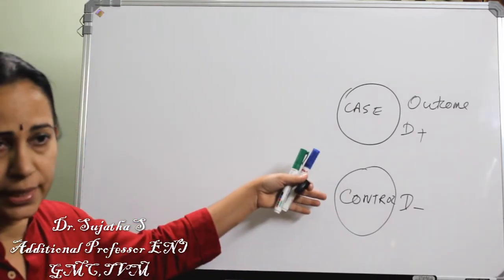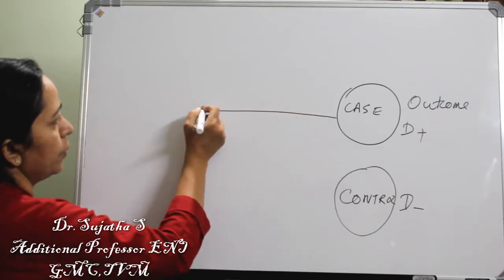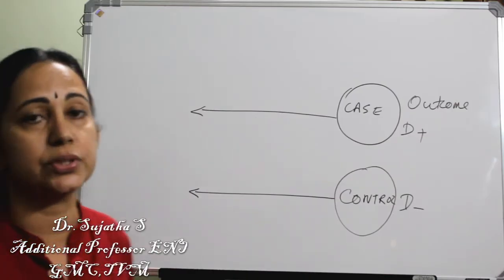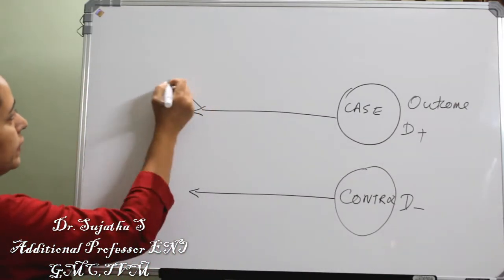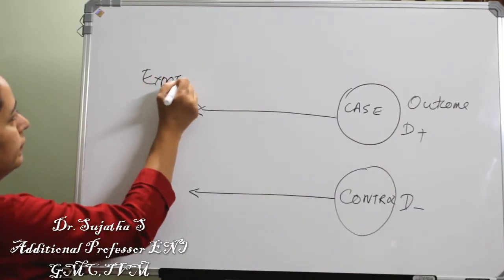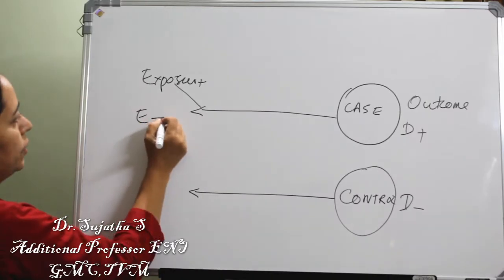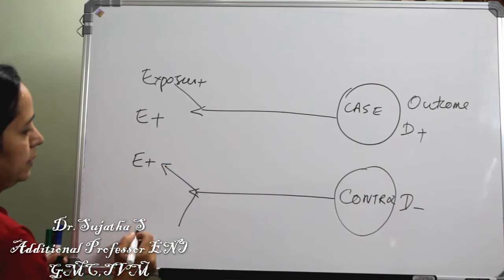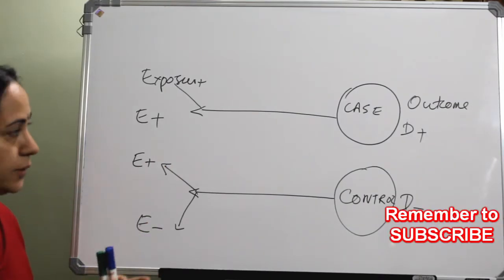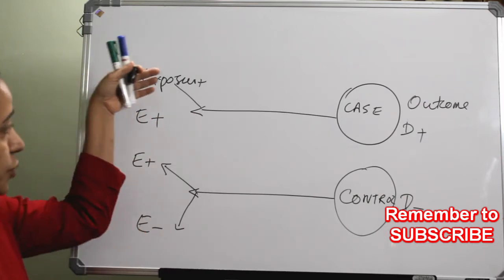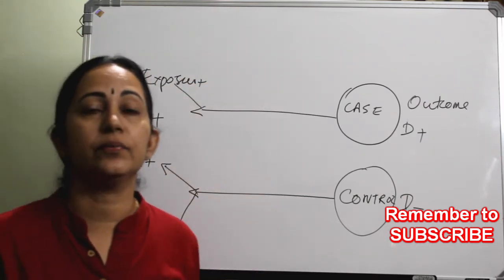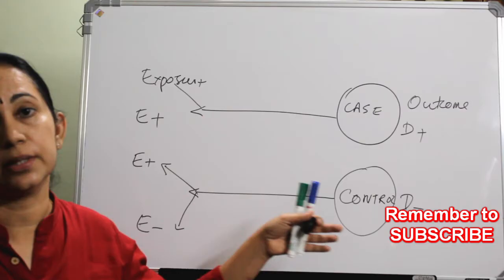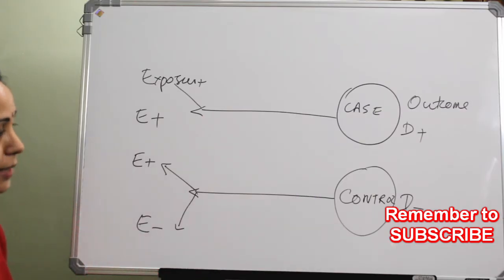Cases and controls are selected, and we go to the past to find out whether an exposure has occurred or not. We look at exposure present or exposure not present in both groups, and then we analyze the frequency of exposure in cases compared to the frequency of exposure in the control group. So this is case-control study.